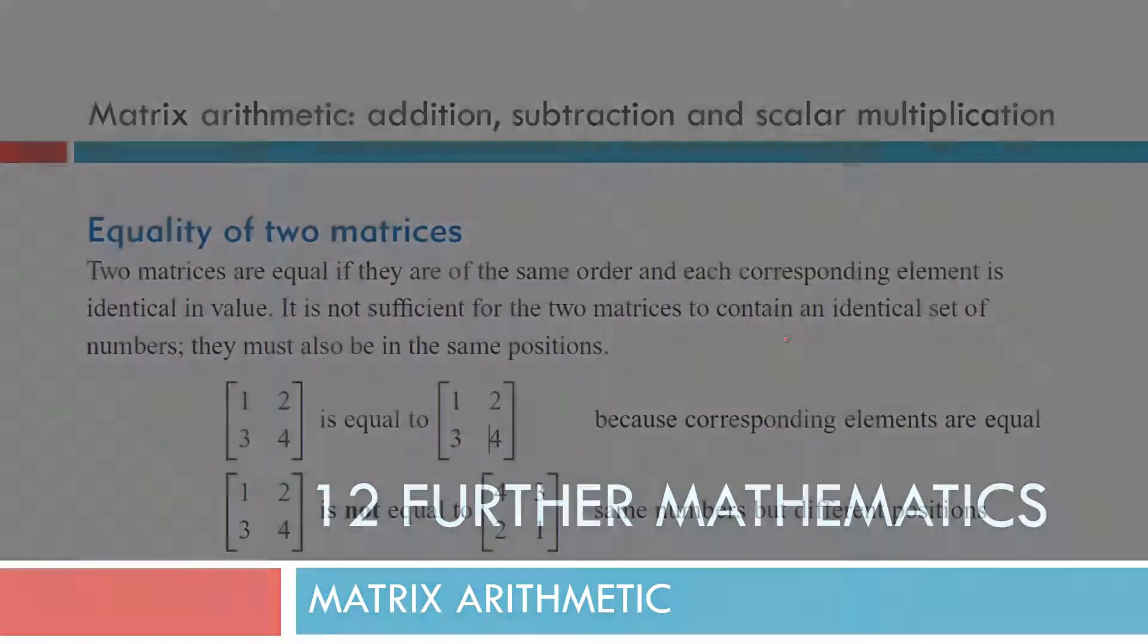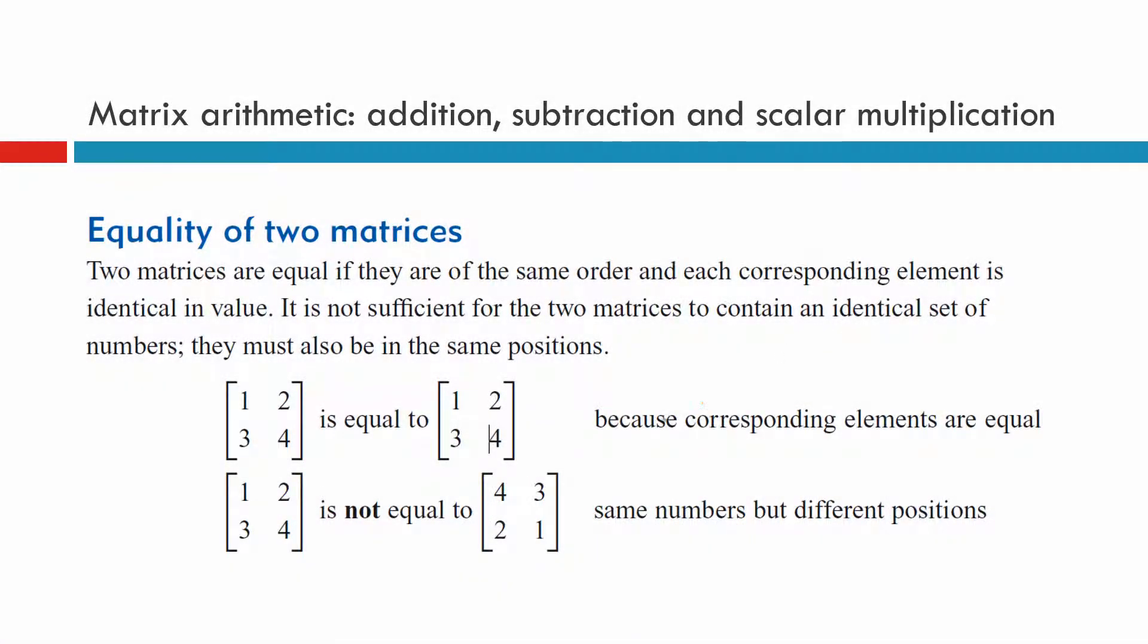Matrix Arithmetic, that's where we're going to start today. Now two matrices are equal if they are exactly the same matrix. That means they have the same order, it means they also have the same elements, the same numbers in the same spot.